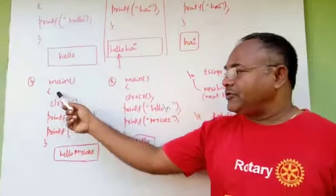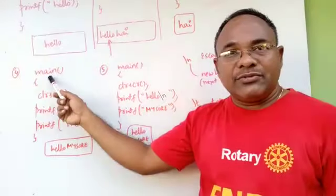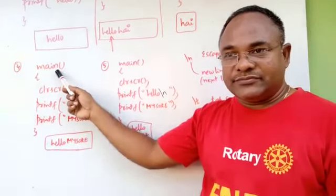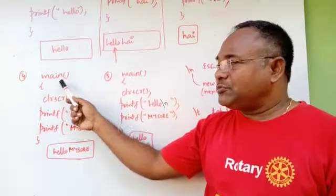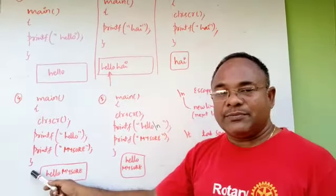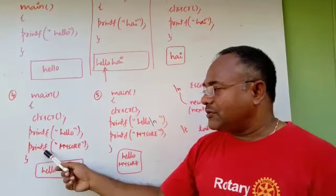Look at program 4. We can have any number of printf statements, but all the statements must be placed within braces only, what you call it as a block. Here we have 2 statements.